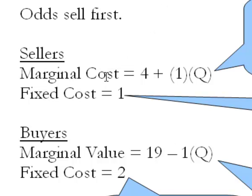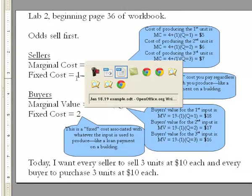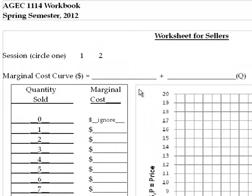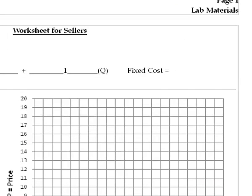So note here it says marginal cost equals 4 plus 1 times Q and fixed cost is 1. And now I'm going to turn to the worksheet for sellers and fill in what the marginal cost is. Marginal cost curve equals 4 plus 1 times Q and then the fixed cost we saw was just 1.